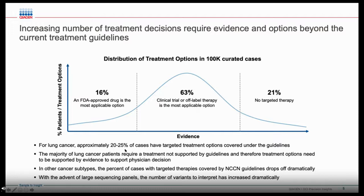Looking at 100,000 cases that NF1 has reported on over the last eight years, in 16% of cases an FDA-approved targeted therapy is the most applicable option. This number may even be an overestimate, as non-small cell lung cancer has a higher-than-average percentage of cases with an approved targeted therapy. In 21% of cases, there are no targeted therapies appropriate for a patient. But in the center of the curve, 63% of cases could qualify for a clinical trial or off-label use of therapy — these are the cases with the most critical need for disease-specific clinical interpretation.